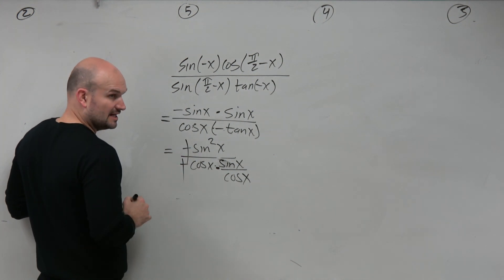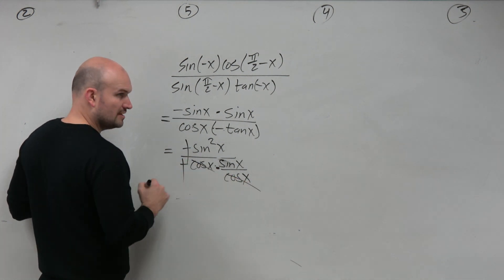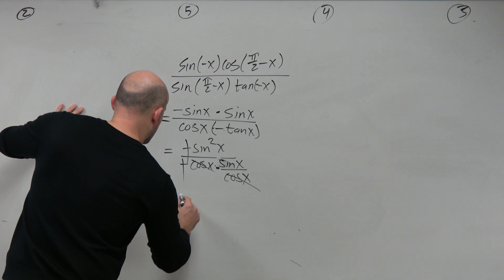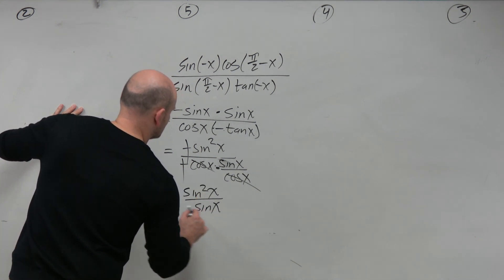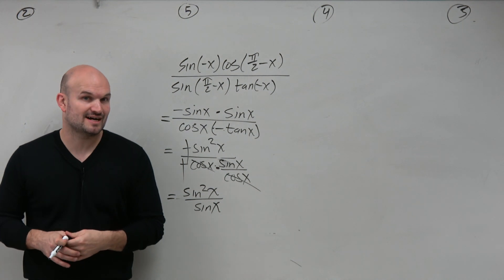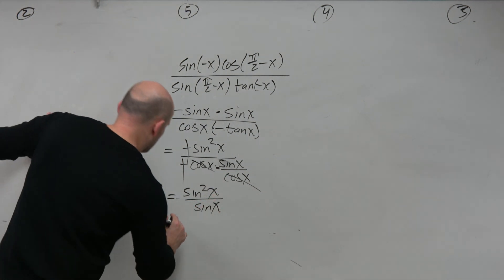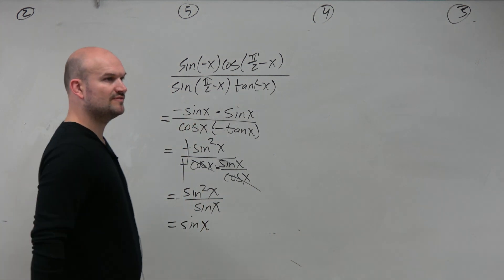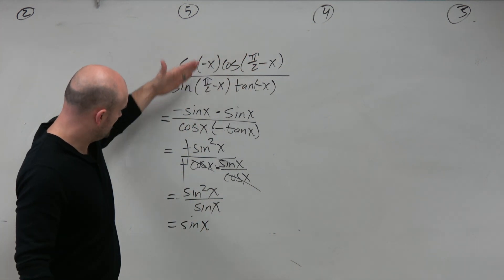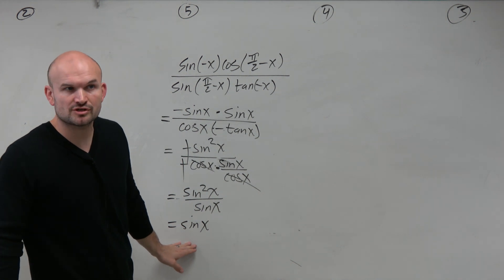All right. Well now, my negatives divide to a positive. My cosines divide out. And I'm left with a sine squared of x all over a sine of x. And that can simplify to just sine of x. Right? And there you go. I have simplified this mess all the way down to one single trigonometric function.